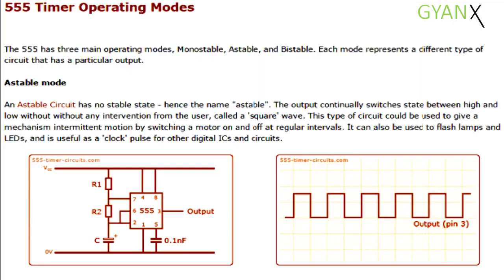This type of circuit could be used to give a mechanism intermittent motion by switching a motor on and off at regular intervals. It can also be used to flash lamps and LEDs, and is useful as a clock pulse for other digital ICs and circuits.